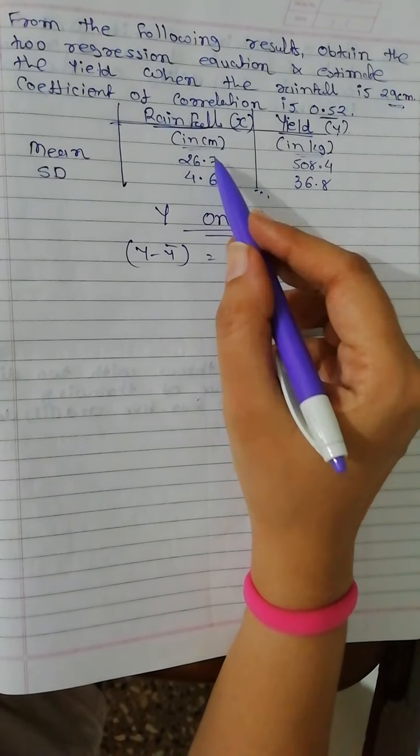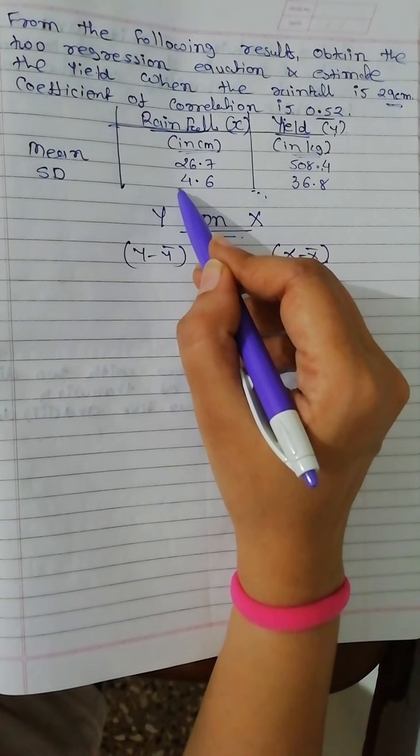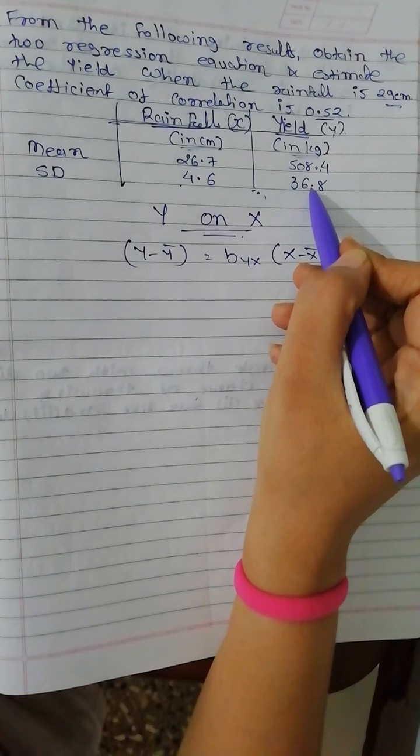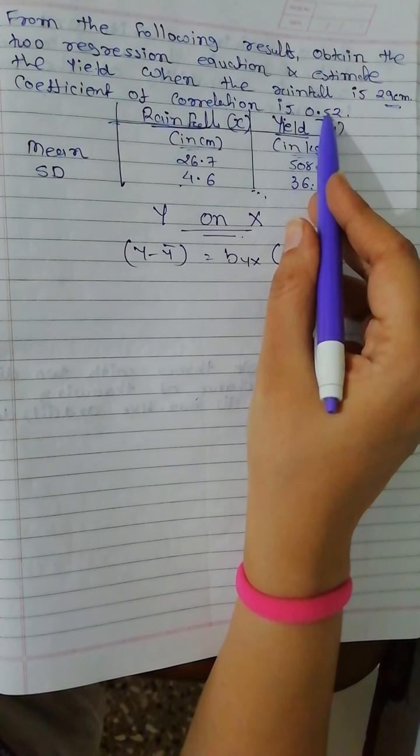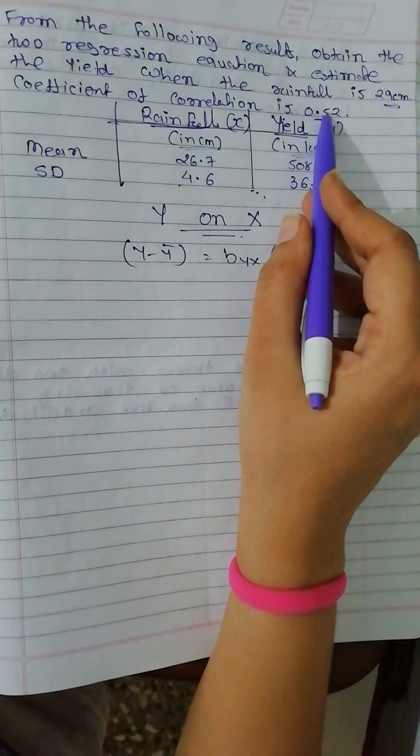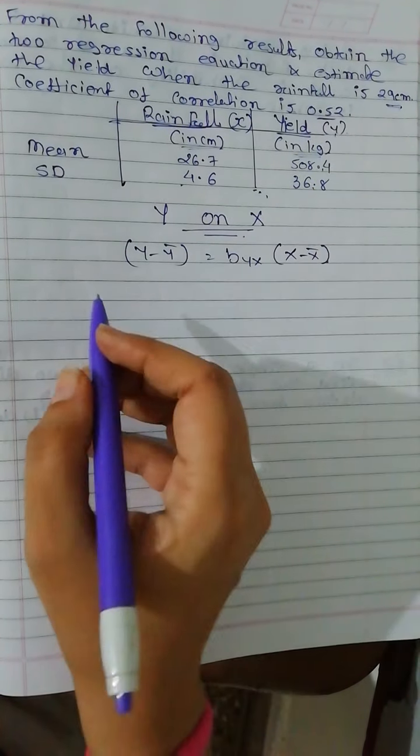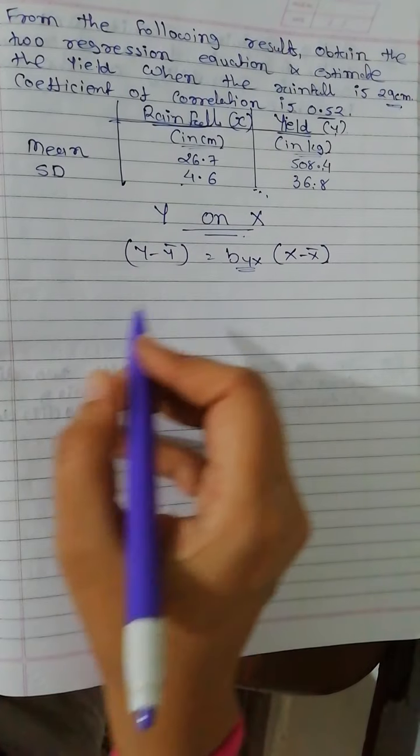Now we have x bar and y bar and standard deviation of x and standard deviation of y and r value. That's it. So now based on r value you can find first of all byx.